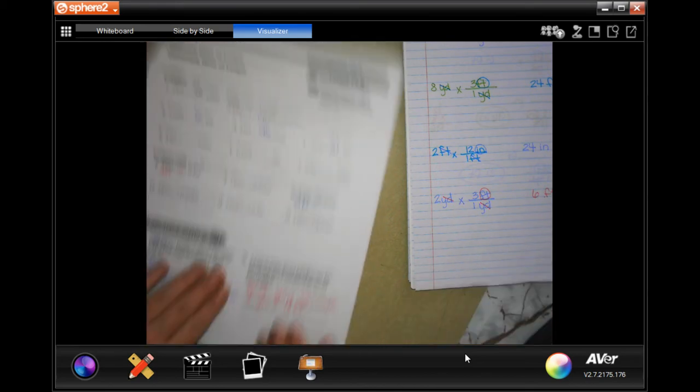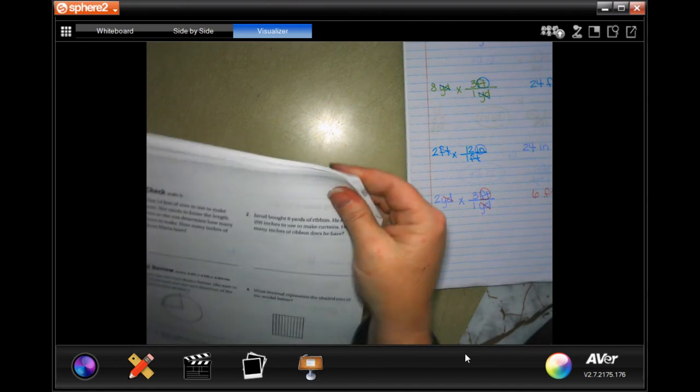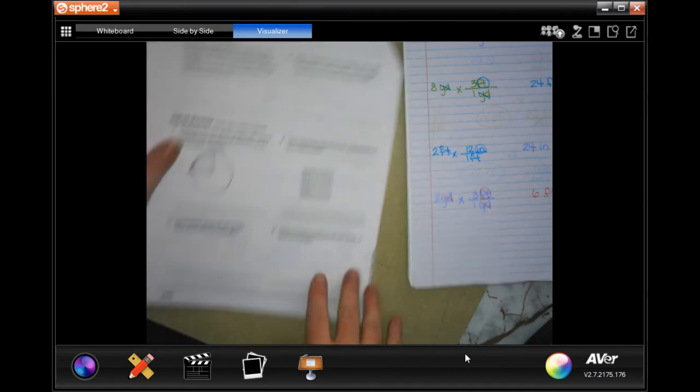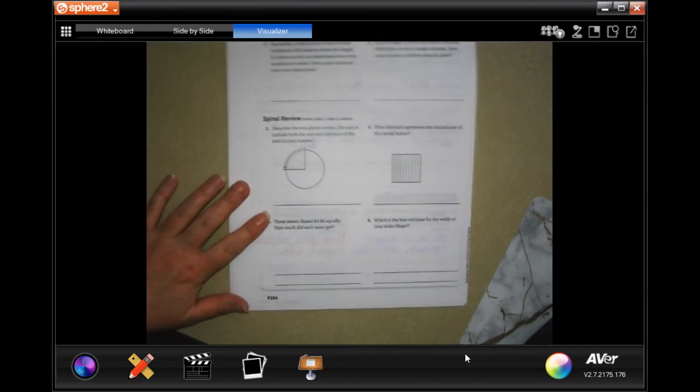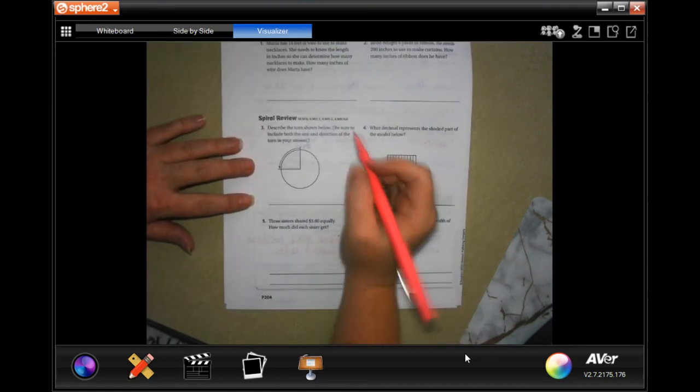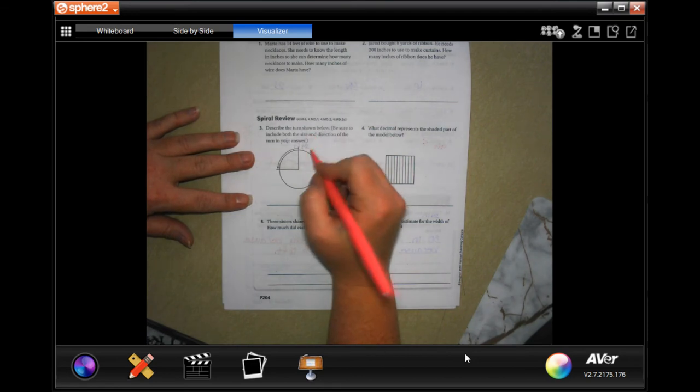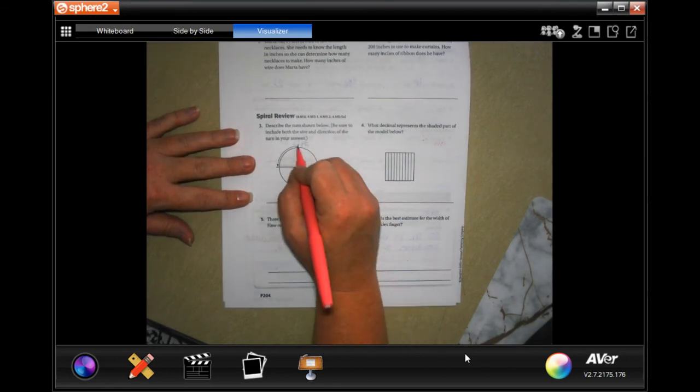All right, guys. We're going to go on to the back. You guys are going to do the lesson checks, just like always. And we're going to go down and do the spiral review. Describe the turn shown below.